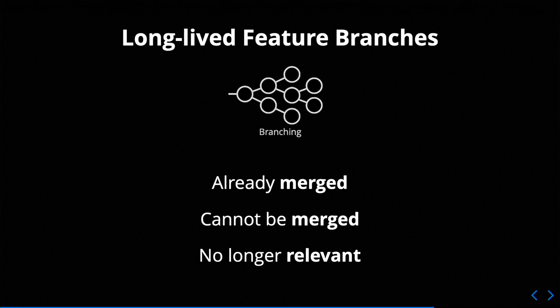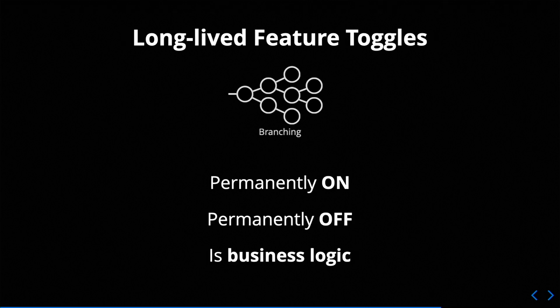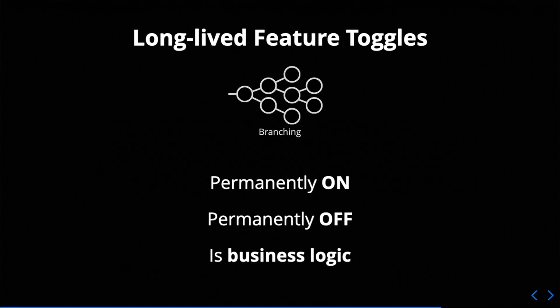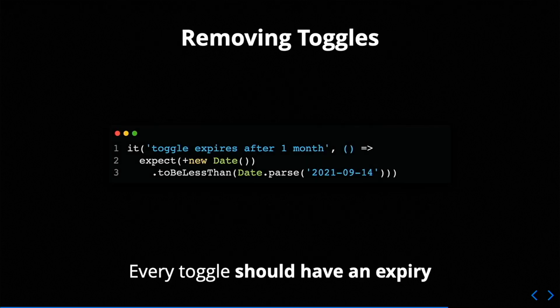There are three things that are potentially true of any long-lived feature branch: it's either already been merged, it can't be merged because there are too many conflicts, or it's code that's no longer relevant — superseded by something else. The same three characteristics are true of any feature toggle that's been in your system for a very long period of time. Those feature toggles are either permanently on or permanently off, so you can remove them. Otherwise, if they're somewhere in the middle — like a canary that's been running for a very long time — you're probably at the stage where it isn't a feature toggle anymore; it's actually part of your business logic.